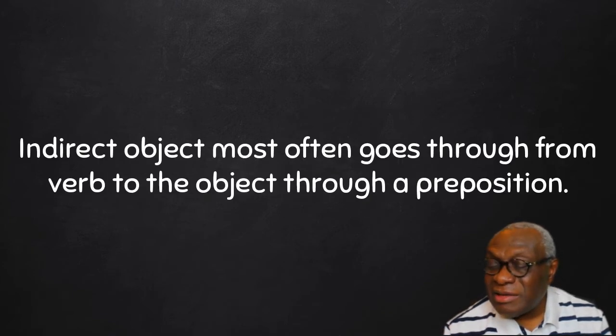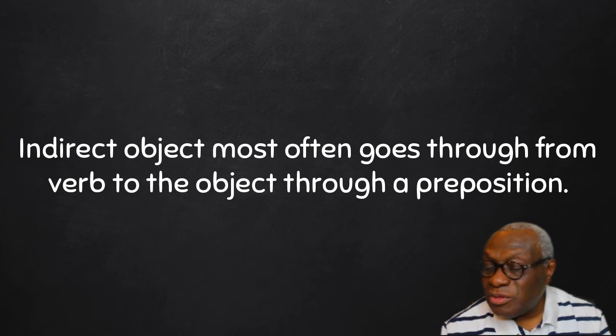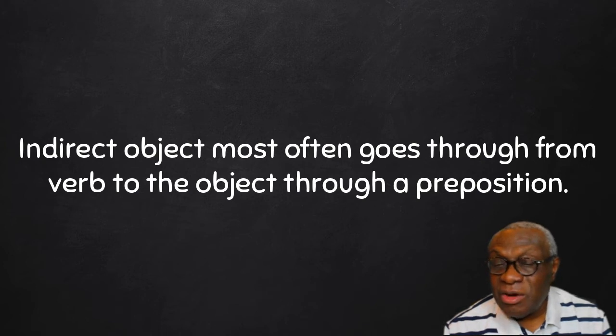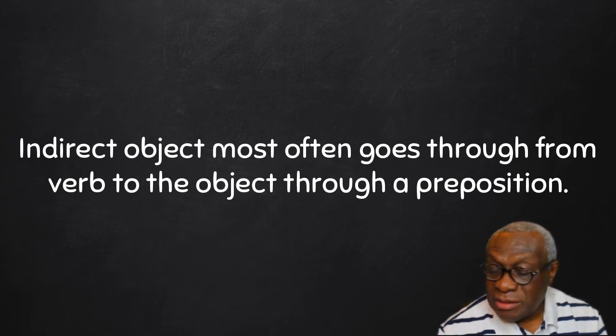So far, what we've seen is that the indirect object most often goes through from verb to the object through a preposition, which is like a border, an obstacle. So prepositions often will introduce the object, which is indirect object.